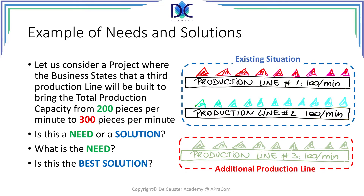On the other hand, a third production line increases the flexibility of the company — you can switch between production lines and may have additional capacity. So there are some advantages and disadvantages, and of course we have to calculate how much they mean in money, but also in terms of risk and other parameters. The second solution — the first alternative — was to increase the capacity of the production lines. This seems to be a very interesting solution.